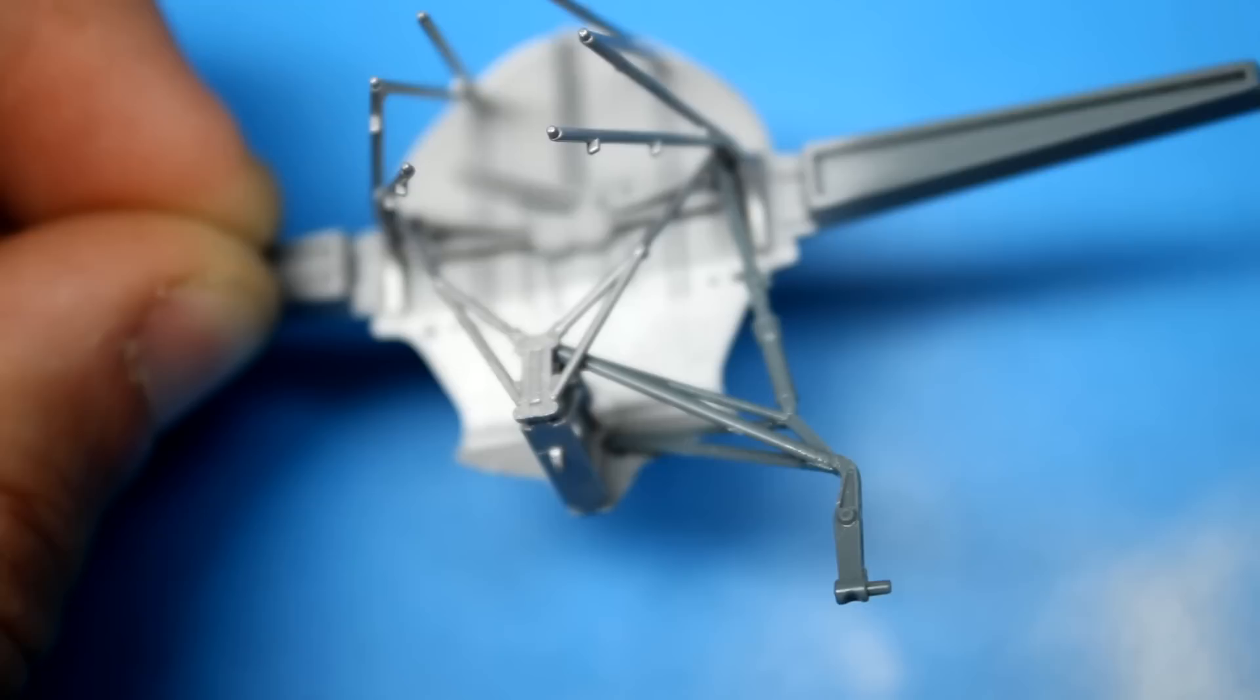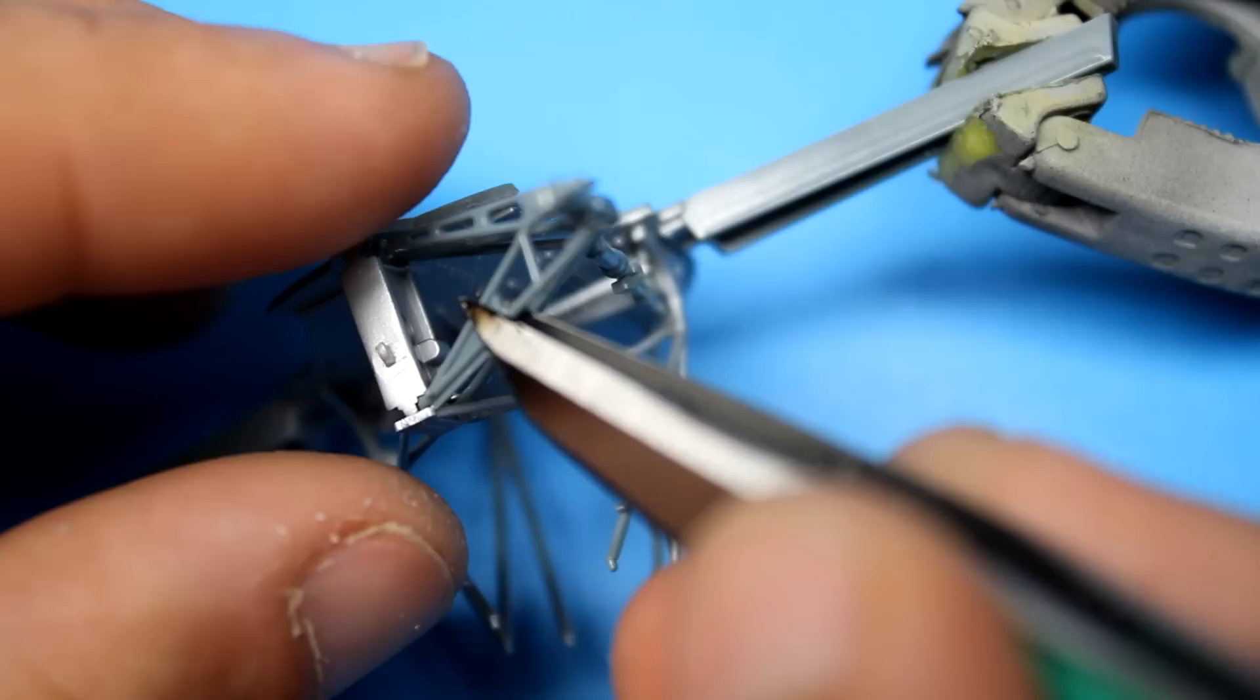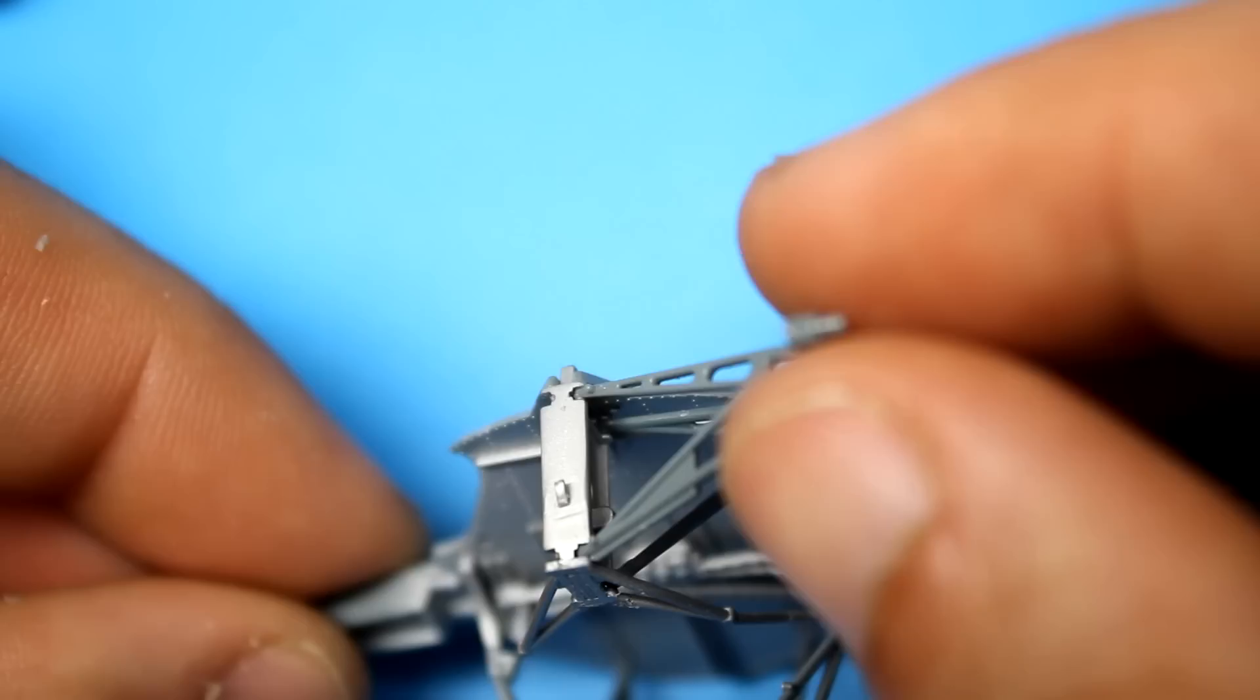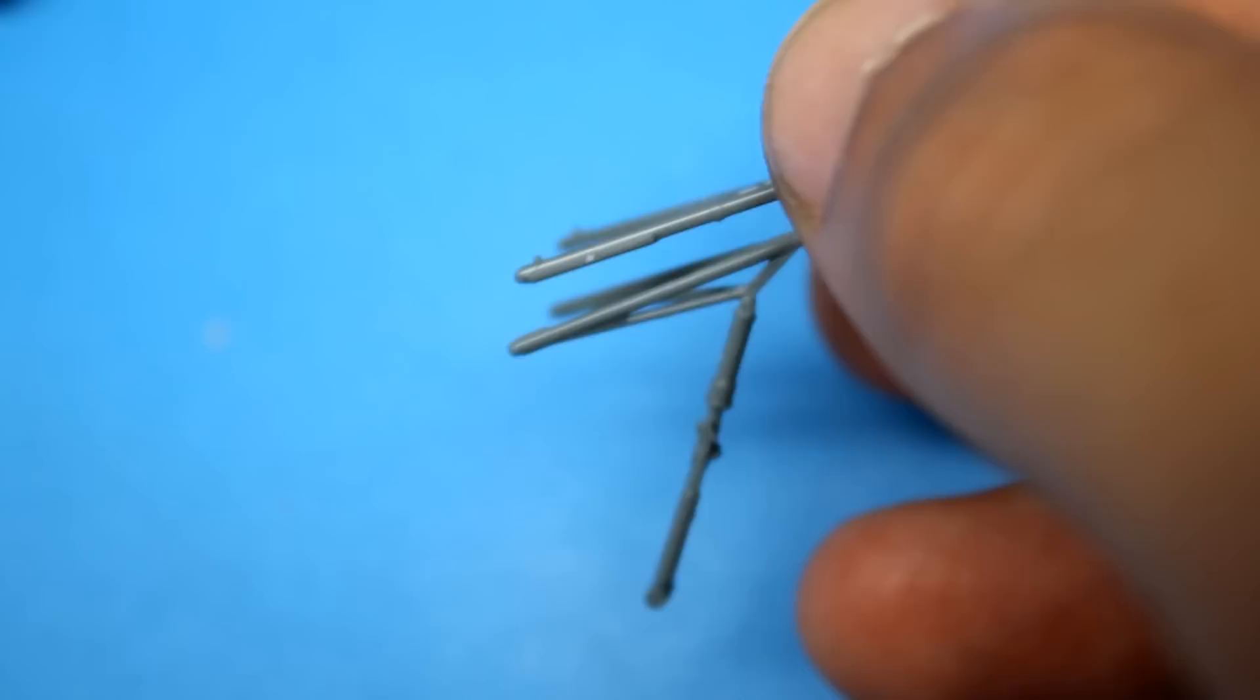I can't stress enough though how much you need to test fit all this before committing it to glue. You should be doing that with everything when you're modeling especially things like this that require other items for support and a proper fit. I let the gear legs dry overnight so they were set in position and then remove them so I could continue with assembly without worrying about knocking them off.